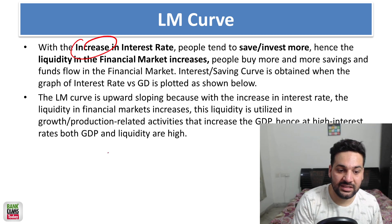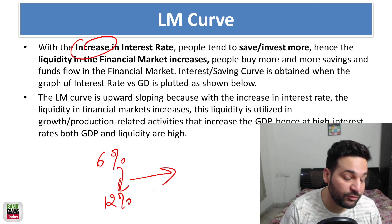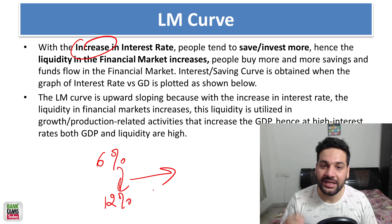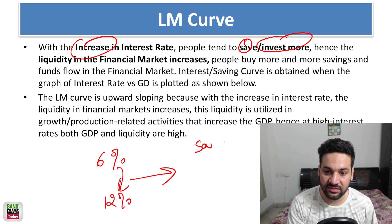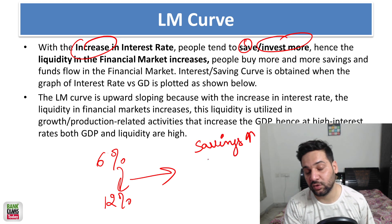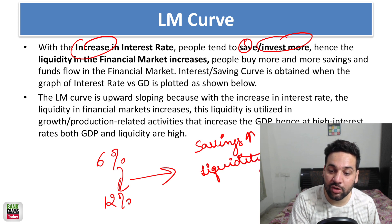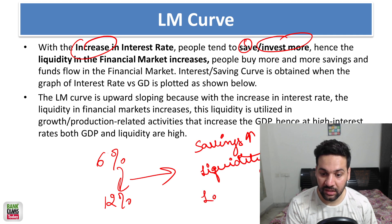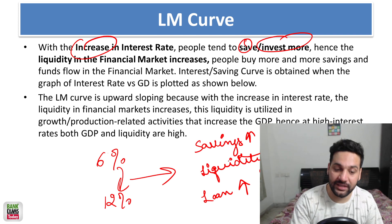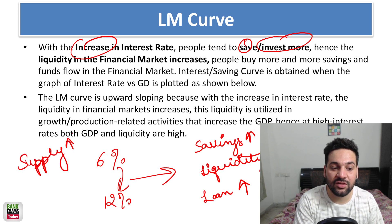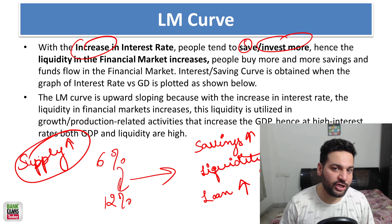Now let's look at the LM curve. If the interest rate increases — say from 6 percent to 12 percent — you get motivation to save and invest your money in FDs. You will save more and invest more, and that money goes to banks. As savings increase, there is more liquidity in the economy. Banks have more money, and businesses can get more loans and funding.